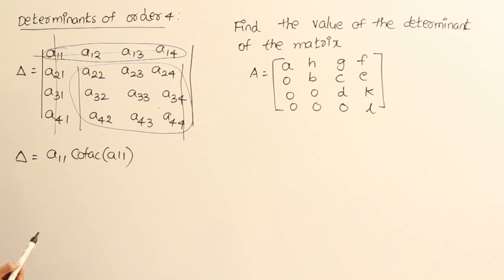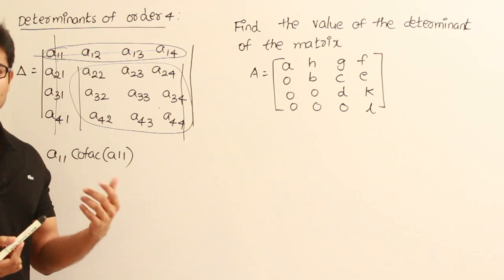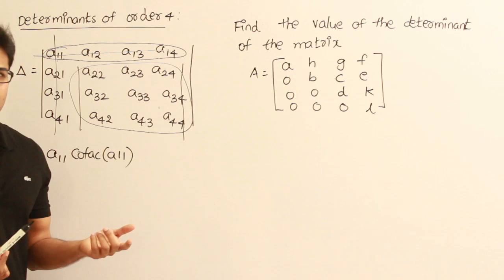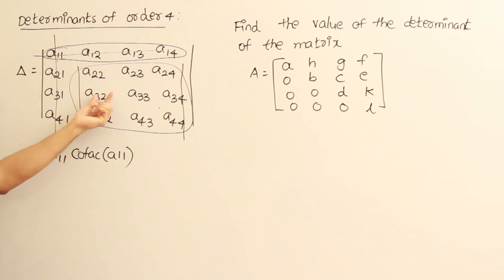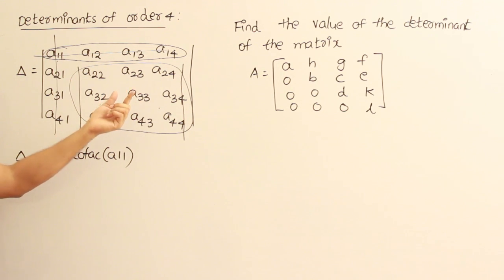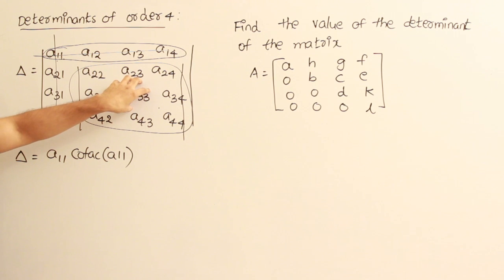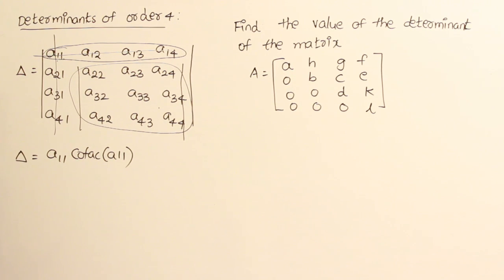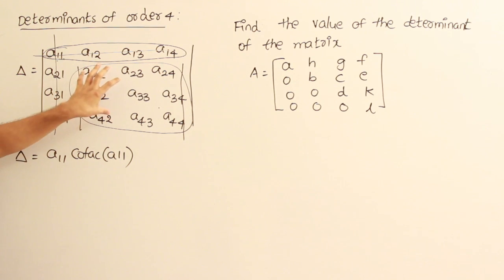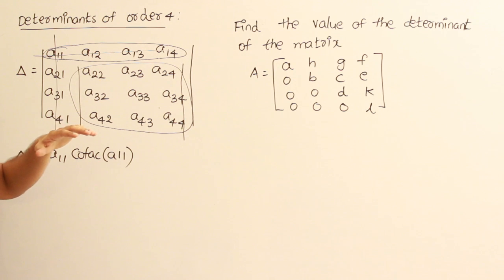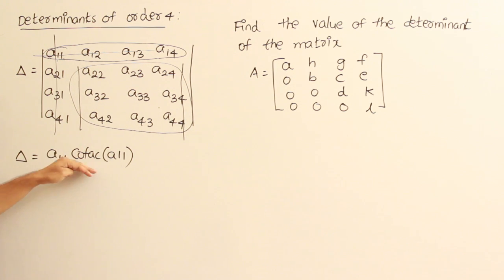The problem with 4 by 4 determinants is that for every element you have to find the cofactor, and to find each cofactor you have to find the determinant of a 3 by 3 matrix — it is going to be very big. But for some matrices it is going to be easy. Using some properties, we can transform the matrix in such a way that computing it becomes easier. I'll explain that later, but for now just focus on how to find the determinant directly.